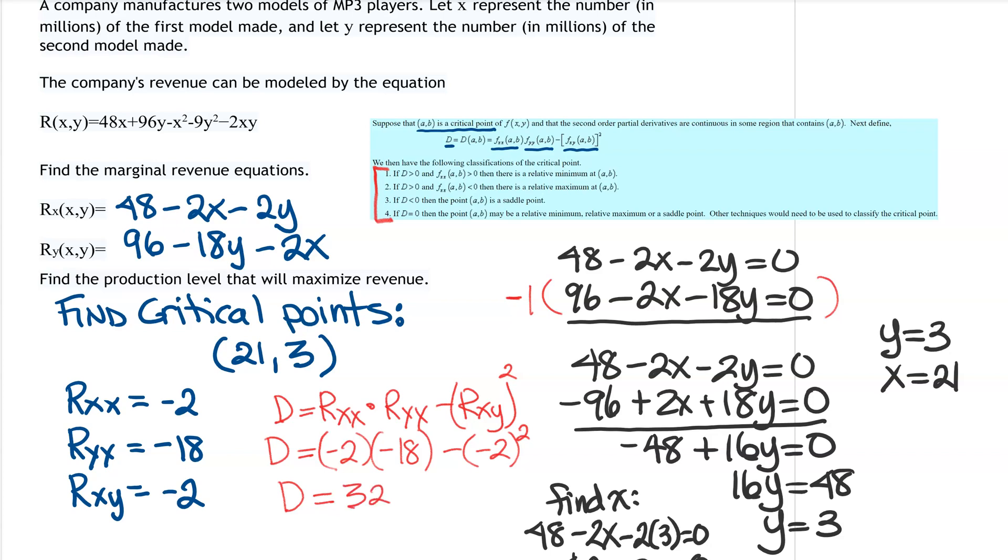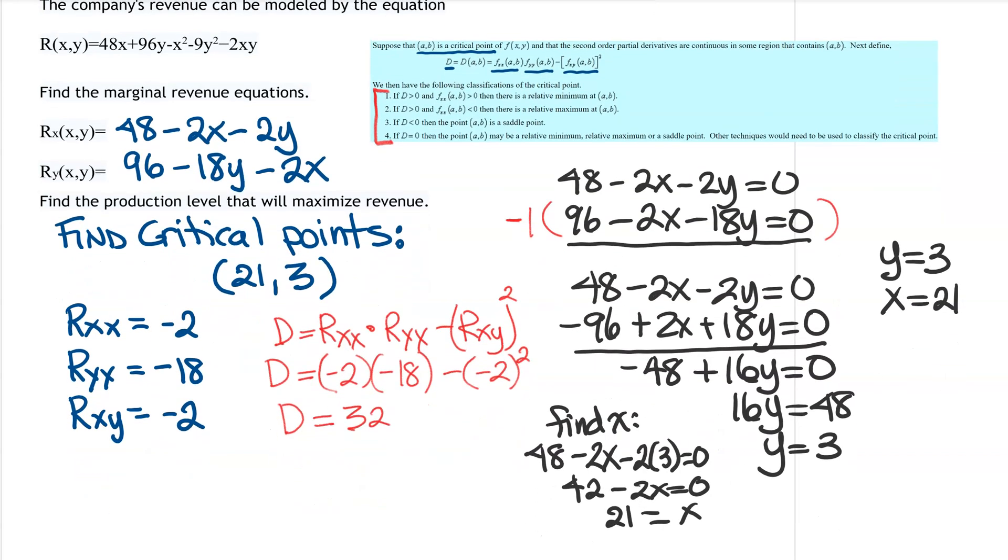Now, it's not so much whether D is 32, it's just does it come out positive or negative. That's really what we're looking for. So this is going to answer our question. So since our D does come out positive, so greater than 0, then the next place we look is at the second derivative with respect to x.